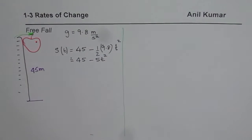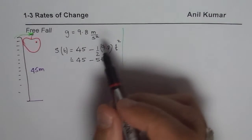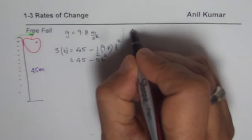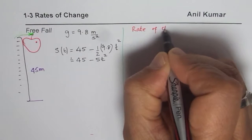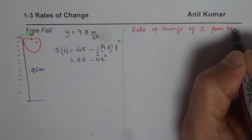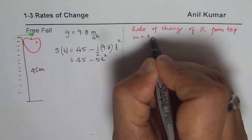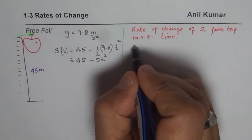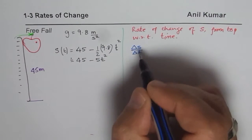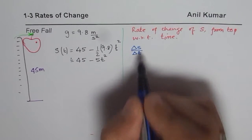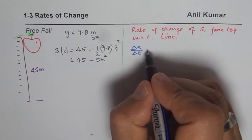The primary problem is to find the rate of change of height — that is, the rate at which the distance from the top is changing. We want to find the rate of change of distance s from the top of the building with respect to time. Basically we want to calculate delta s over delta t at an instance of time where the change in time is very, very small.